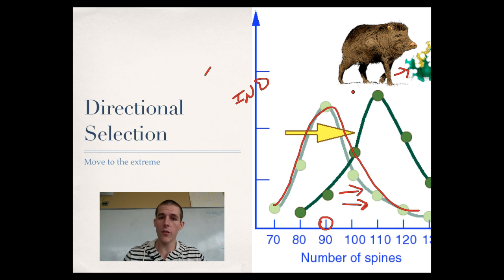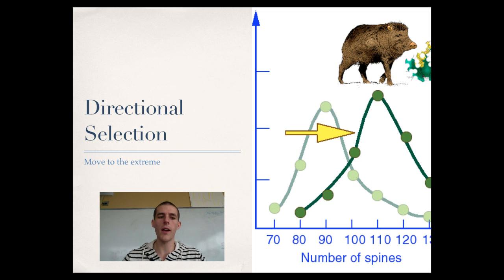This is not the cactus thinking, oh, I'm suddenly going to pop out more spines. No, this is the peccary eating the individuals that have fewer spines, leaving the ones that have the most spines to reproduce, passing that trait along to their kids. And so over time, that whole population shifts towards having more spines.